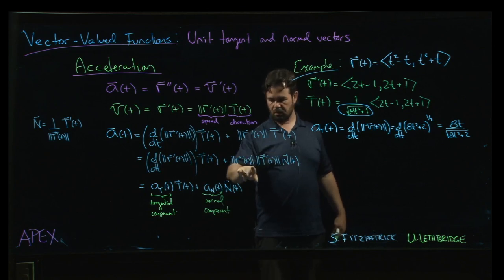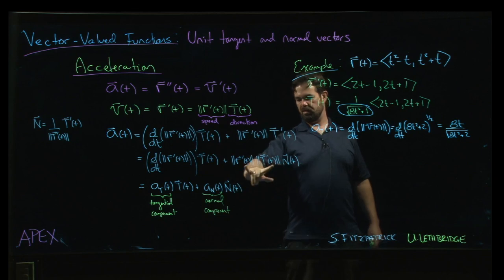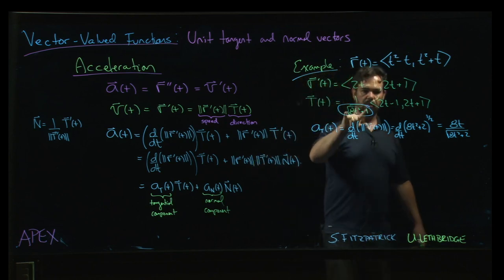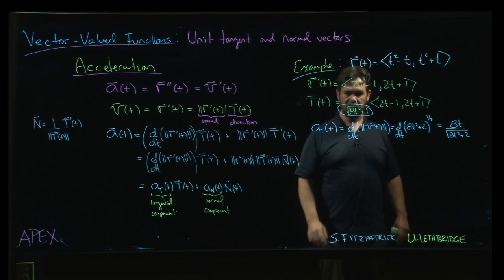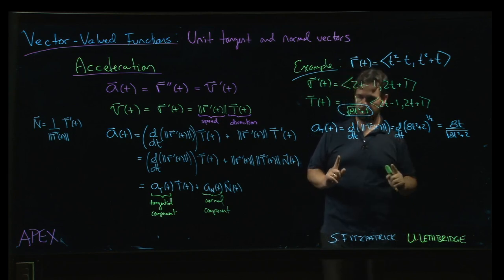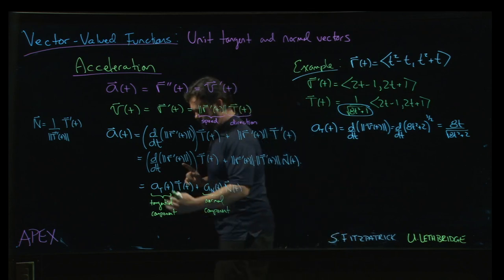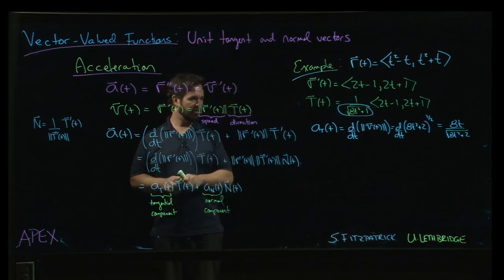Now, we have this result here, fine, but to use this result for the normal component, we need the magnitude of T', which means we need to compute T'. And we did that finding the normal vector, and we found that it was kind of a pain in the butt to do it. So, how do we save ourselves some trouble?